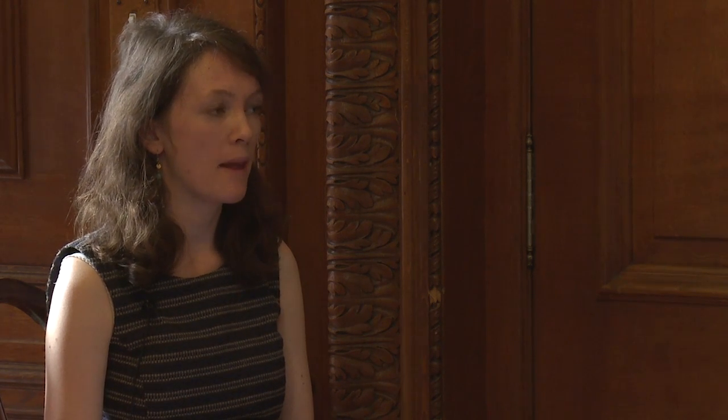A useful indicator of credit conditions is a credit spread. That's the difference between the loan rates facing households and firms and some measure of risk-free interest rates, such as bank rate, which is the policy rate set by the Bank of England. For example, this chart shows the interest rate charged for a 75% loan-to-value tracker mortgage in blue alongside bank rate in pink. The difference between them is the credit spread for this mortgage product.